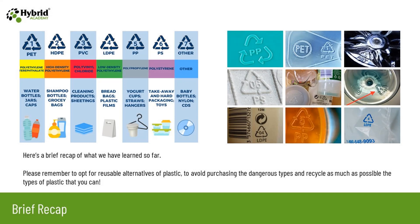Here's a brief recap of what we have learned about the seven different categories of plastic. You may have seen RIC codes — Resin Identification Codes — embedded on the lids or bottoms of plastic products, just to identify which category they fall under. Please remember to opt for reusable alternatives to plastic, avoid purchasing dangerous types, and recycle as much as possible.